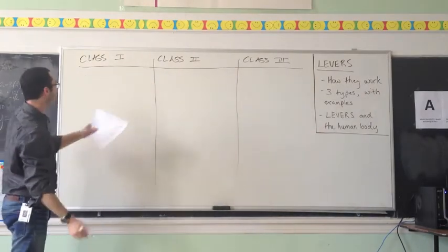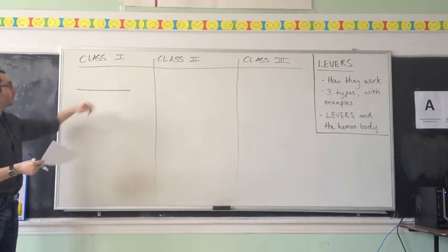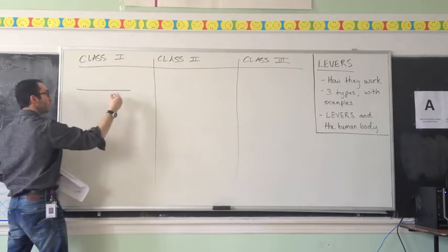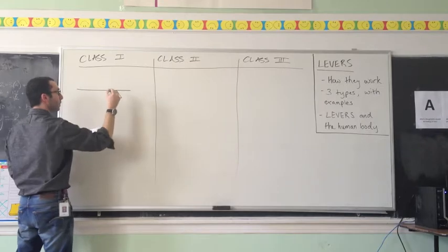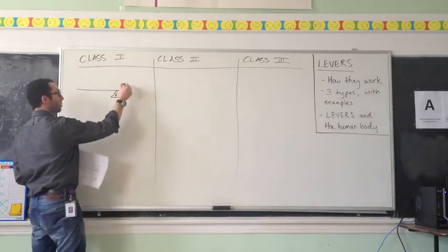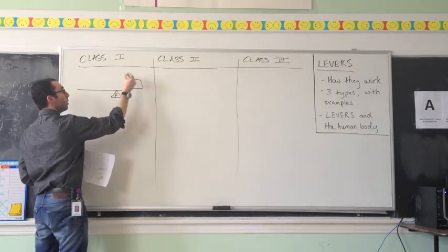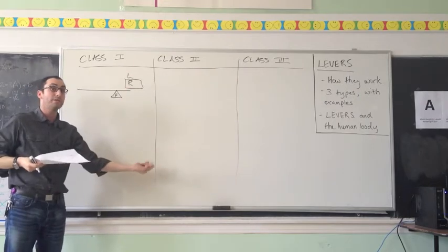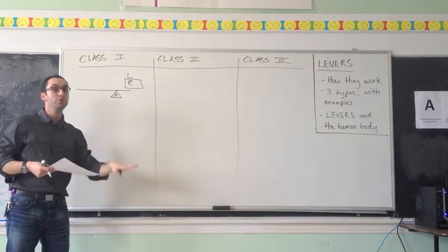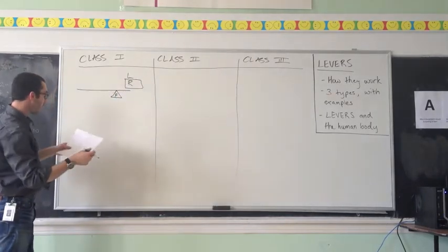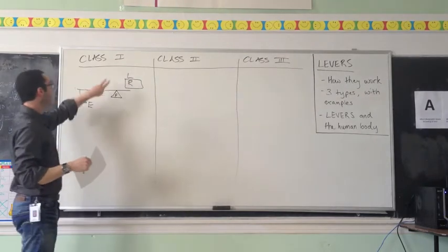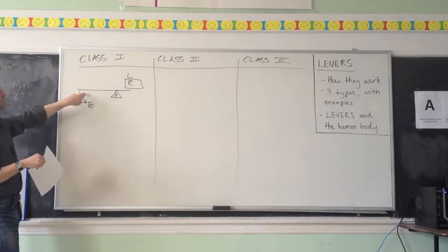Let's take a look at the first class, called class one. We have our beam, and in a class one lever, the fulcrum is somewhere in between the two endpoints of the beam — not at one end, not at the other, somewhere in between. We also need to think about the other important ingredients: the resistance, or load, which is the weight or object we're trying to move, and the effort — you grab onto part of the lever and use it to move the load. In a class one lever, the fulcrum is in between the resistance and the effort applied.